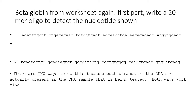What we're supposed to do is write a 20-mer oligo that will detect the nucleotide shown — the nucleotide being the T. It's important to realize that there are actually two different 20-mer oligos you could use for this purpose, because there are two strands in the DNA. In a genomic DNA sample, it really doesn't matter which one you choose.